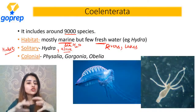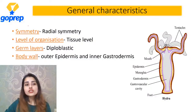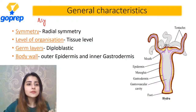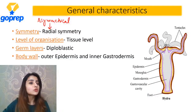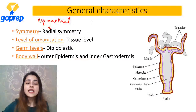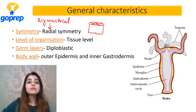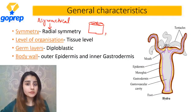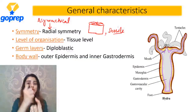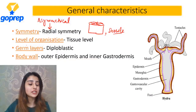Coming on to the basic characteristic - kal hamne baat ki thi about symmetry. Porifera ki jo symmetry thi wo sabse simplest thi - asymmetrical. Ab Porifera se aage hum aage hain Coelenterata mein, toh ab symmetry bhi advance ho gayi - yahaan par kaun si symmetry? Radial symmetry. Radial symmetry mein body can be divided into halves by any plane passing through the center. Radial symmetry ussay beneficial hai jo sessile hai - attached to the substratum.